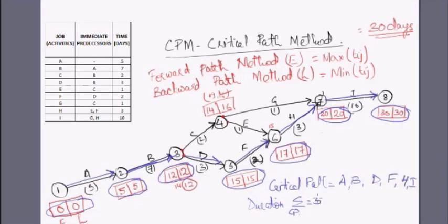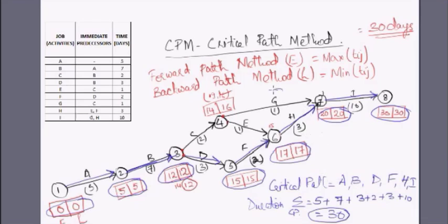The duration of the critical path: 5 plus 7 plus 3 plus 2 plus 3 plus 10 equals 30, which is exactly the project completion time. This confirms that the critical path controls the project completion time. Any delay in executing these activities will delay the project. The remaining activities — G, E, and C — are not on the critical path and have some gap, meaning they can be delayed to some extent.